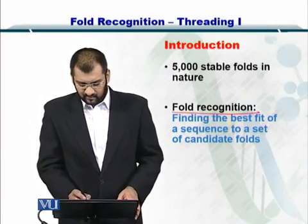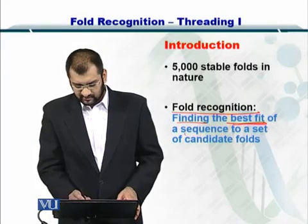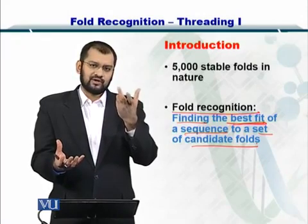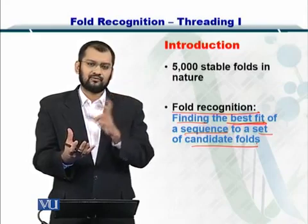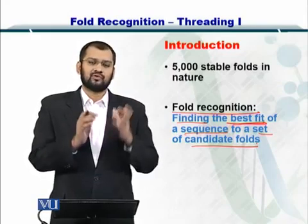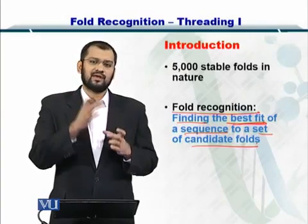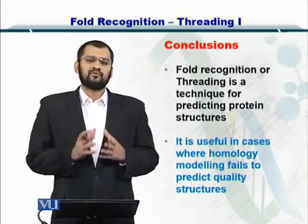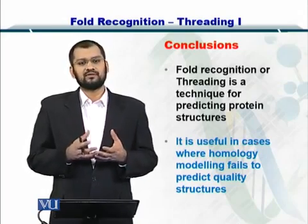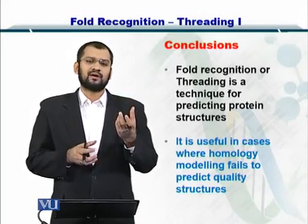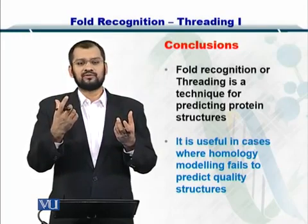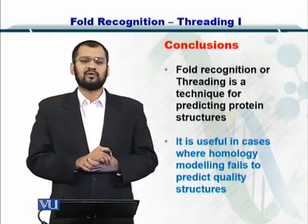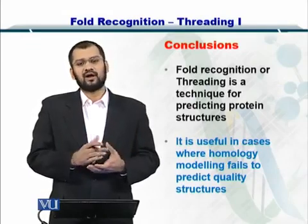Fold recognition then becomes a problem in which we find the best fit of a sequence to a set of candidate folds. You have several folds in a database and you try to find how your sequence matches those folds. The fold which matches the sequence in the best way is selected. In conclusion, fold prediction or threading is a protein structure prediction strategy in which we compare a sequence with the sequences of different folds. If they are homologous, we see if the sequence can also form that fold, and by combining those folds we arrive at the tertiary structure of the protein.